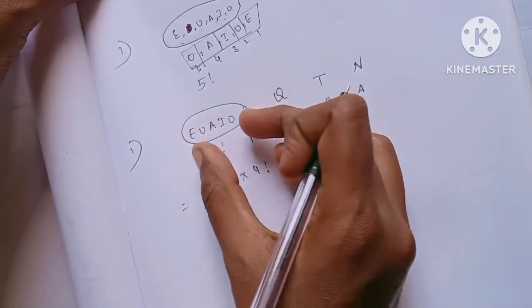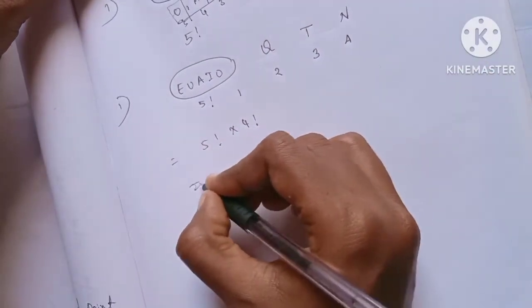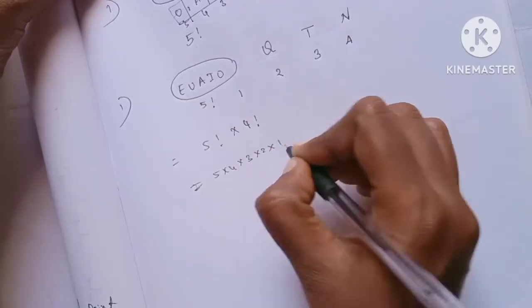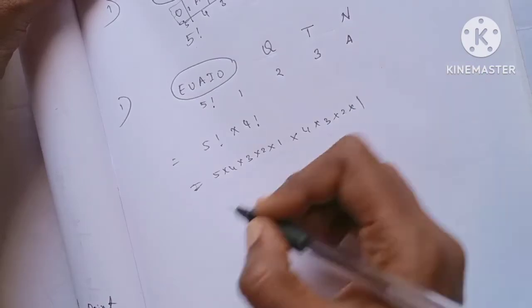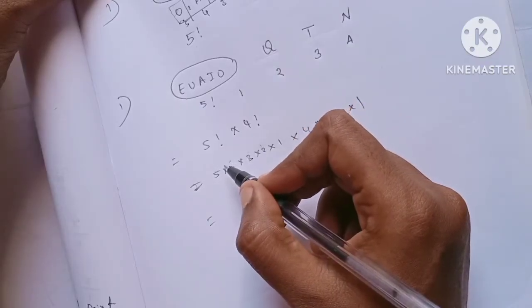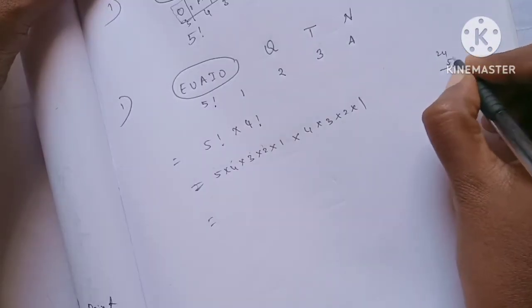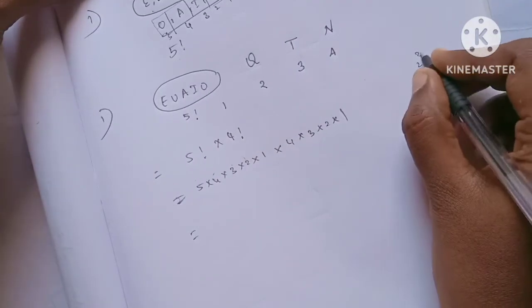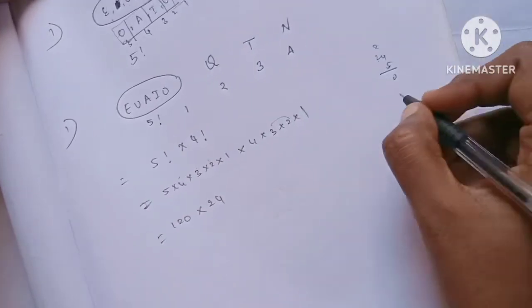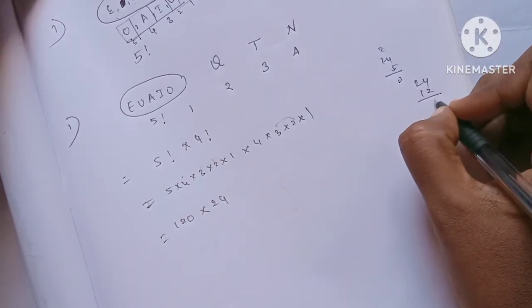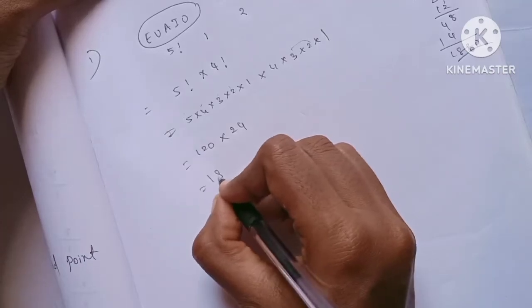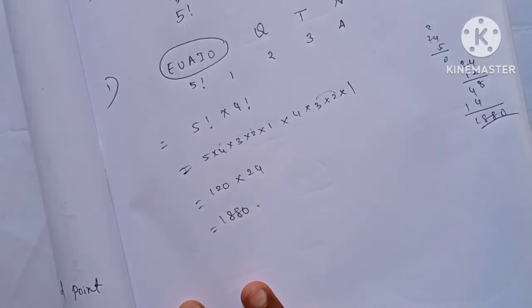So the total for vowels always together is 5 factorial times 4 factorial. 5 factorial is 5 × 4 × 3 × 2 × 1 = 120. 4 factorial is 4 × 3 × 2 × 1 = 24. Multiplying: 120 × 24 = 2880. So 2880 strings have the vowels always together.